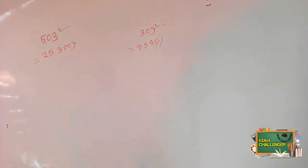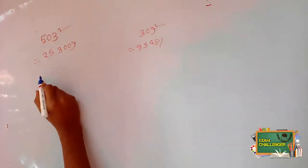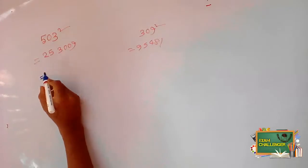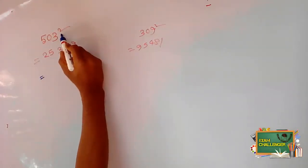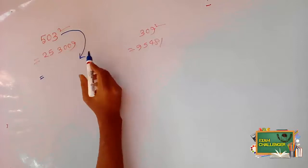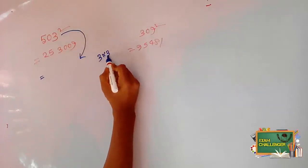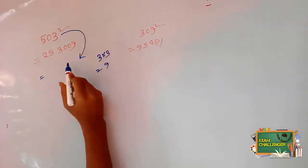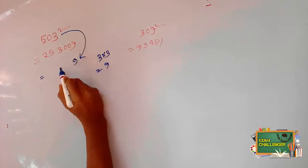Let me show you the last digit. There is 3 here. So 3 into 3 gives us 9. So obviously we write 9 here at the end.